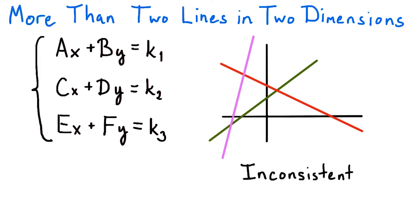To describe systems with no common point of intersection, we use the term inconsistent. We will be using this terminology in the future, so I wanted to go ahead and introduce it here.